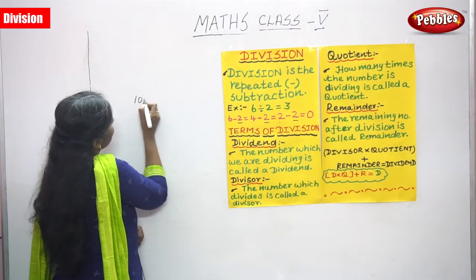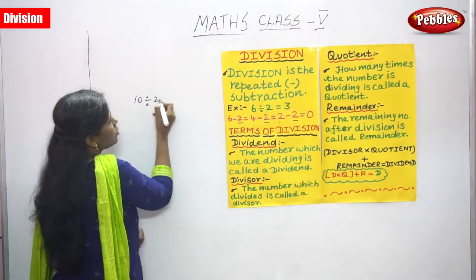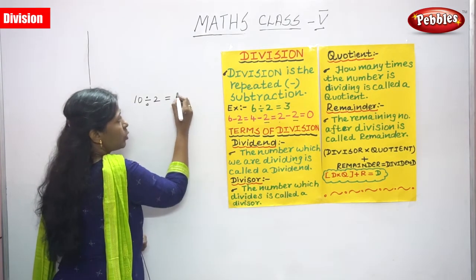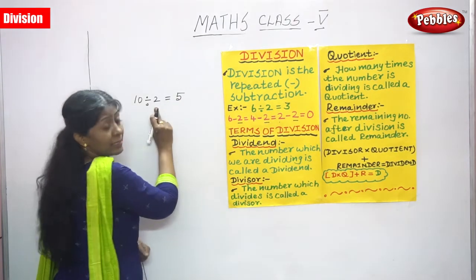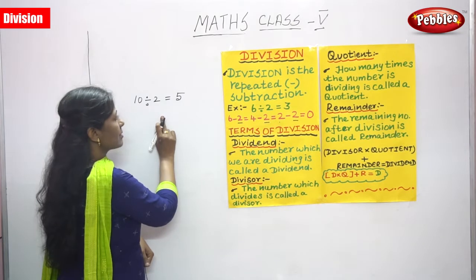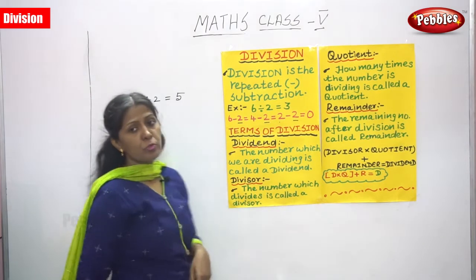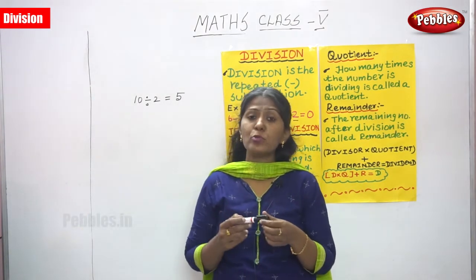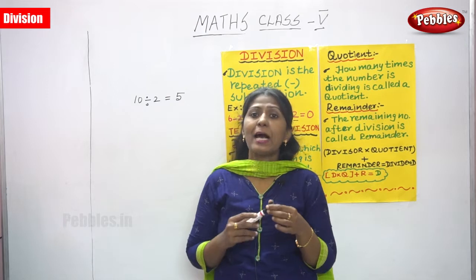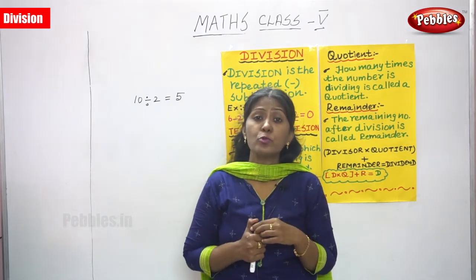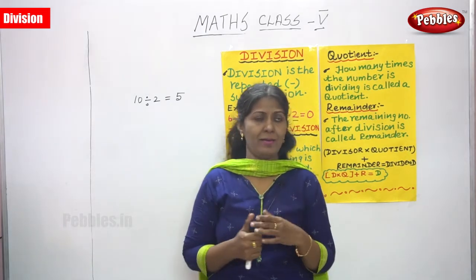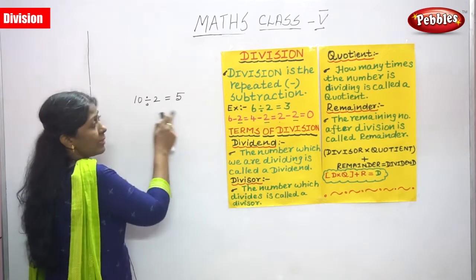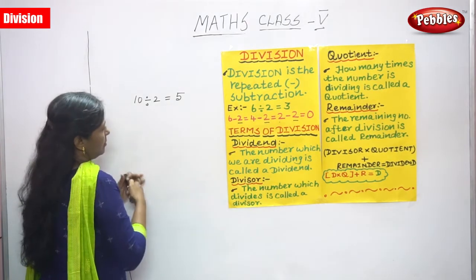For example, 10 divided by 2. The answer is 5. Because you have to say the 2 times table: 1 two is 2, 2 twos are 4, 3 twos are 6, 4 twos are 8, and 5 twos are 10. That is the answer, so we have to use the multiplication table.